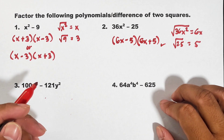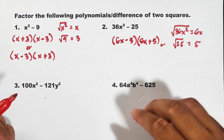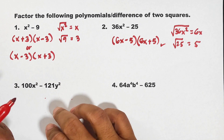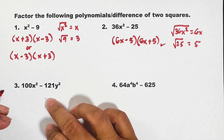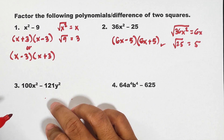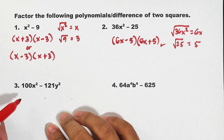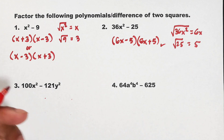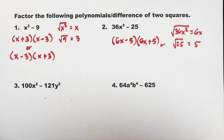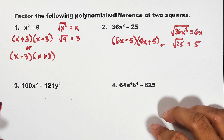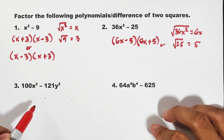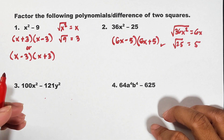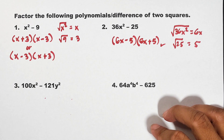I hope you got that — that's our pattern on how to factor polynomials. Now you can pause for a while and check if you can factor out number three. We have 100x squared minus 121y squared. You can pause for a while. Okay, number three: 100x squared minus 121y squared is definitely under difference of two squares.